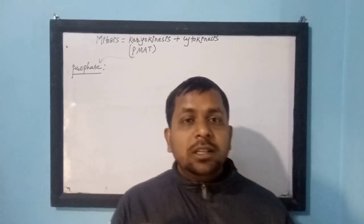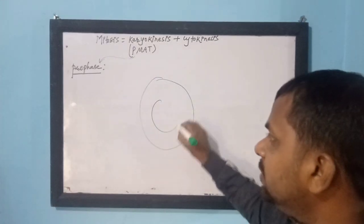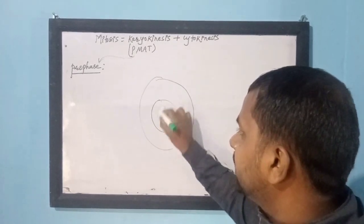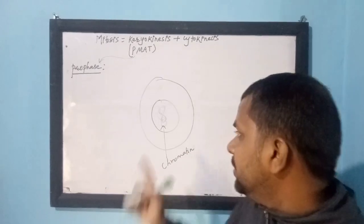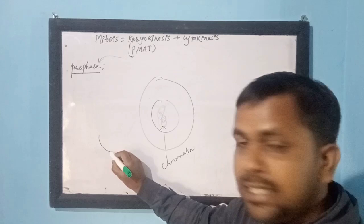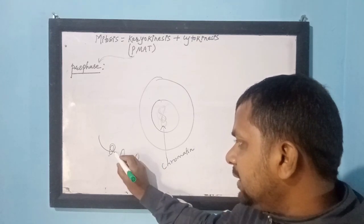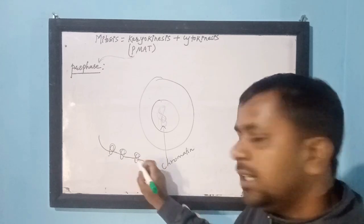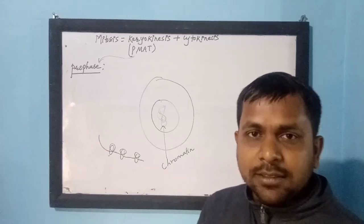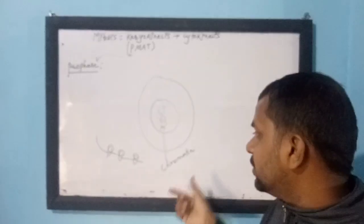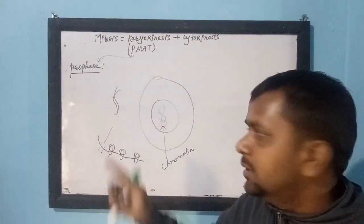In prophase, the first stage of karyokinesis, inside the nucleus there is DNA called chromatin. It is called chromatin because the DNA thread is wrapped around histone proteins. When DNA is wrapped around the protein, that structure is called chromatin. Inside the nucleus, the DNA is present in the form of chromatin, which is a double-stranded structure.